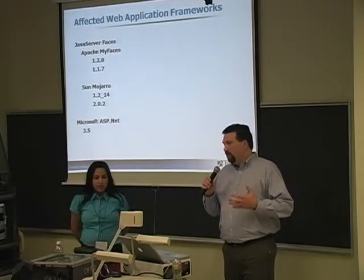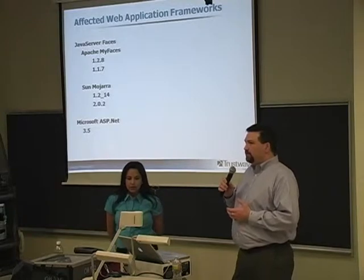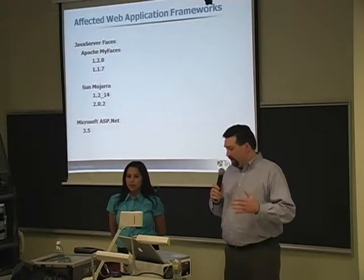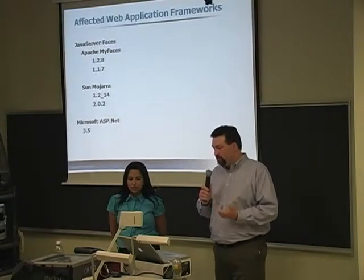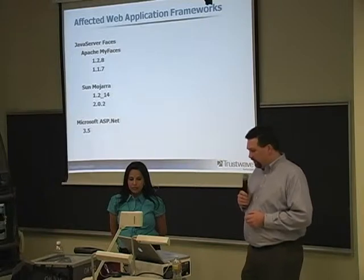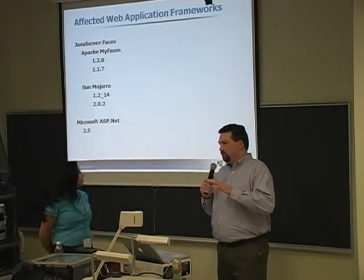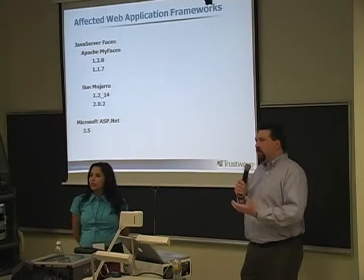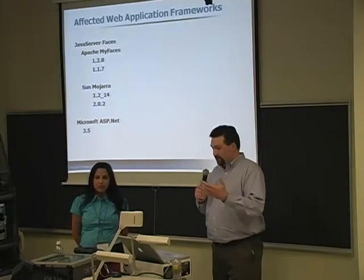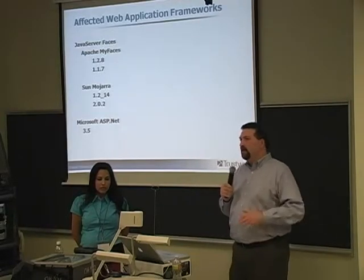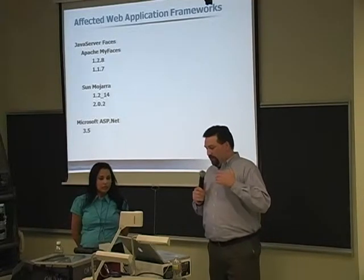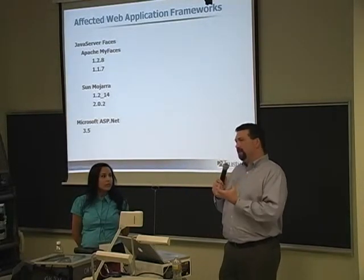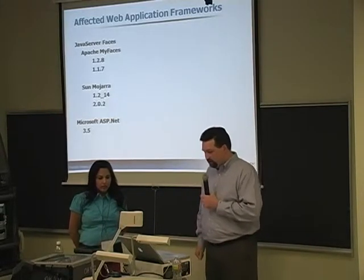There are three frameworks affected by this. Two of them are implementations of the Java Server Faces standard, which was formalized by Sun but not directly implemented as part of Java. The two main implementations are Apache MyFaces, where we made the original discovery of the vulnerability, and Sun Mojarra, which implements the same standard. Apache MyFaces and Sun Mojarra both implement the same set of interfaces, but from a code point of view they're completely separate. Because of the way they've implemented view state, though, they're both vulnerable to effectively the same attack. The actual code has to differ slightly due to some differences in how they generate the view state, but fundamentally it's the same.